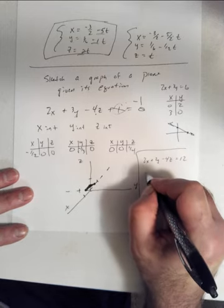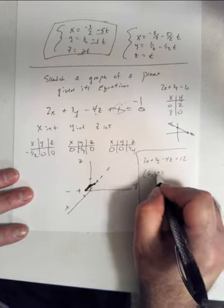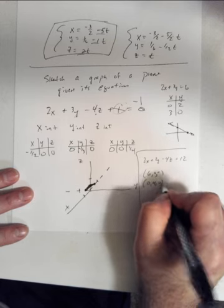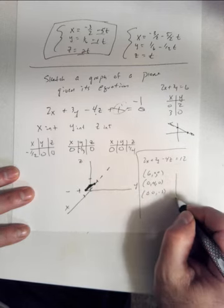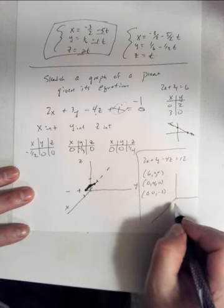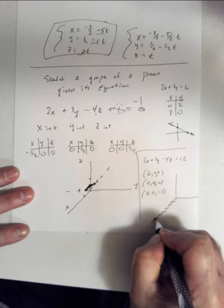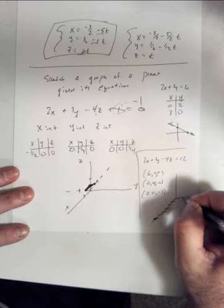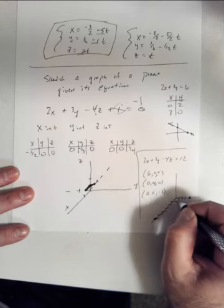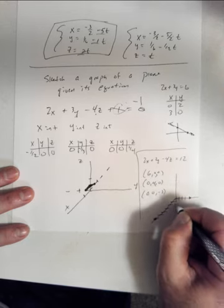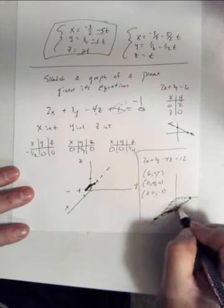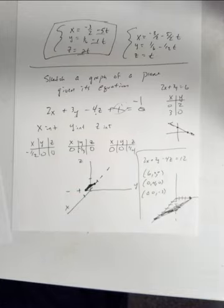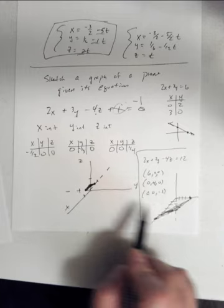If it had been 2X + 3Y − 4Z = 12, the intercepts would be nicer: X-intercept = 6, Y-intercept = 4, Z-intercept = −3. Plot those three points, color in the triangle, and you're good to go. Notice that these two plane equations — with different D values but same normal — are parallel planes.